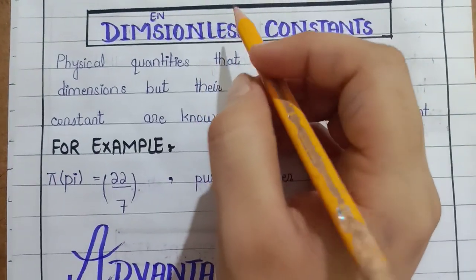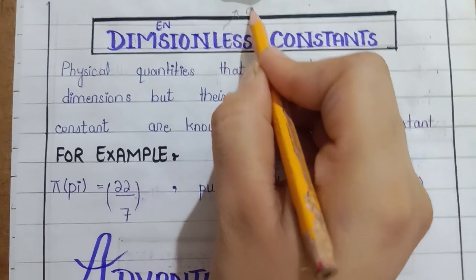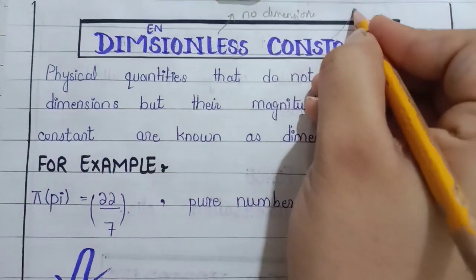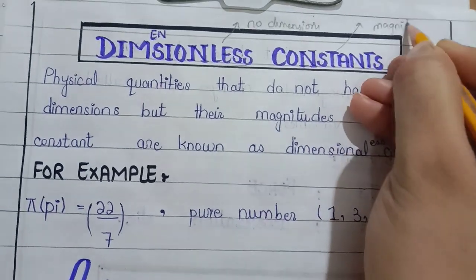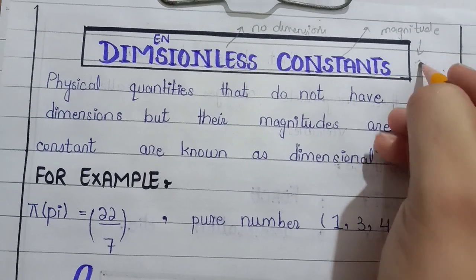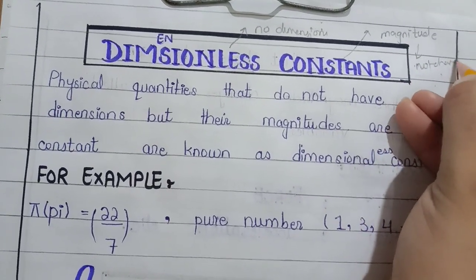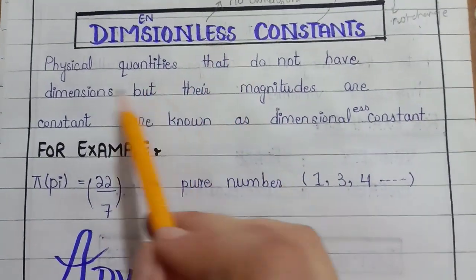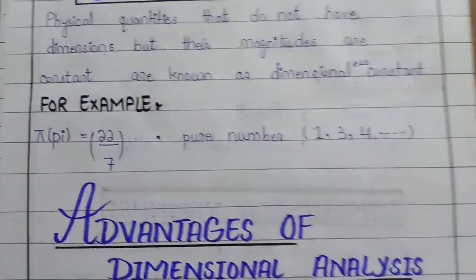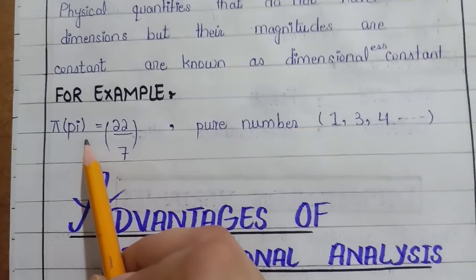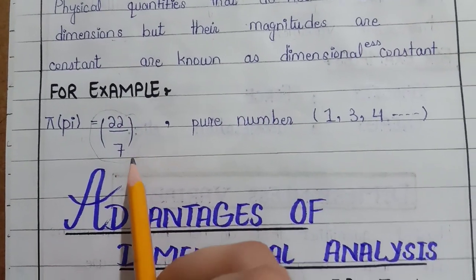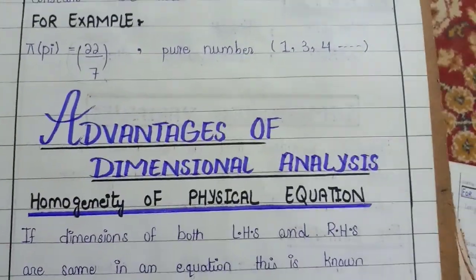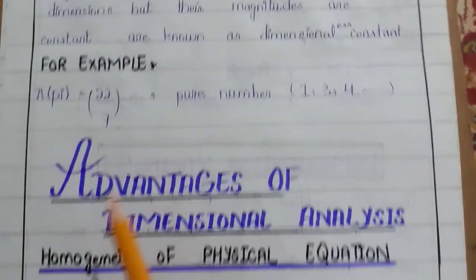Now for 'dimensionless constants': 'less' is attached, so no dimensions. The magnitude is also constant — not changing. So these are physical quantities that do not have dimensions and whose magnitude is also constant. For example, pi — it has no dimensions but has a constant value of 22/7. Pure numbers 1, 2, 3 and so on are also dimensionless constants.